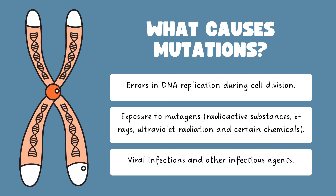What causes mutations? There are errors in DNA replication during cell division, exposure to mutagens — that is radioactive substances or X-rays, ultraviolet radiation, and certain chemicals — as well as viral infections and other infectious agents.